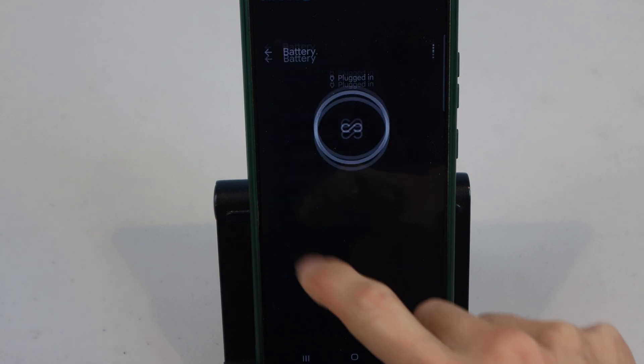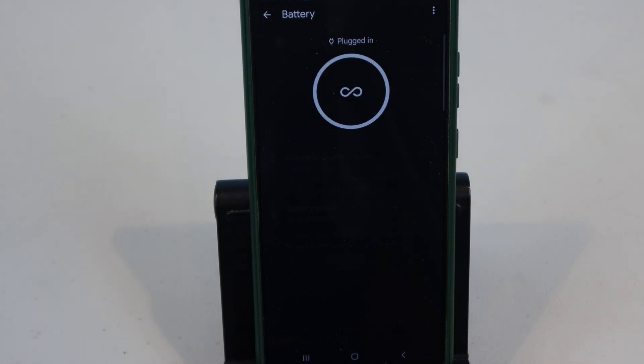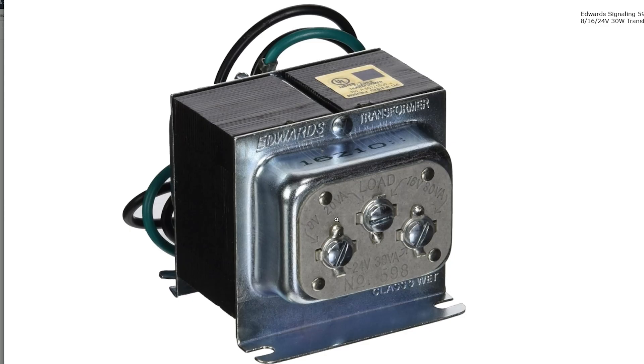If you're having issues with slow or incomplete charging of your video doorbell, I recommend upgrading your transformer to 24V 30VA.